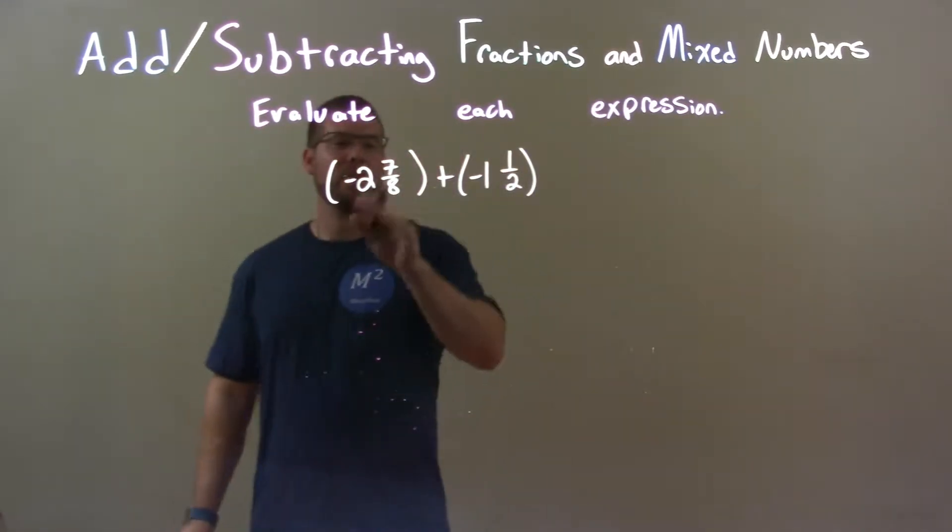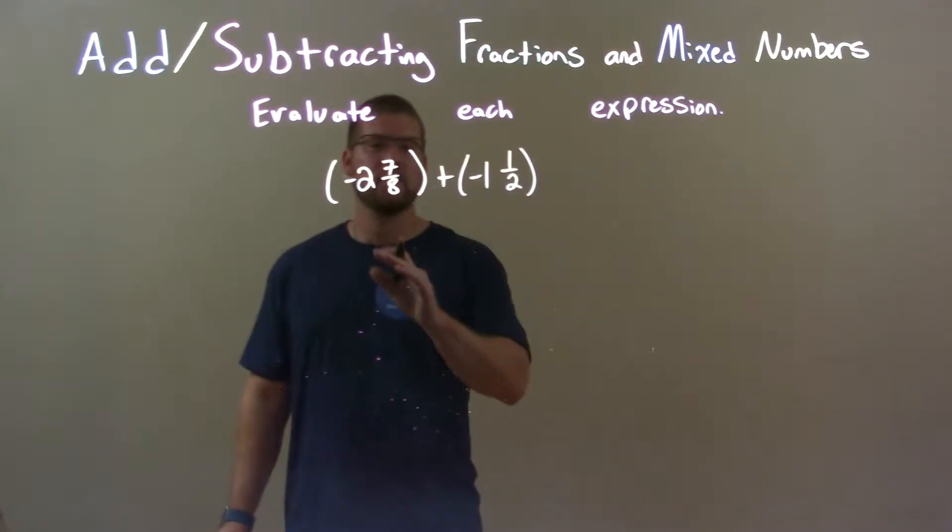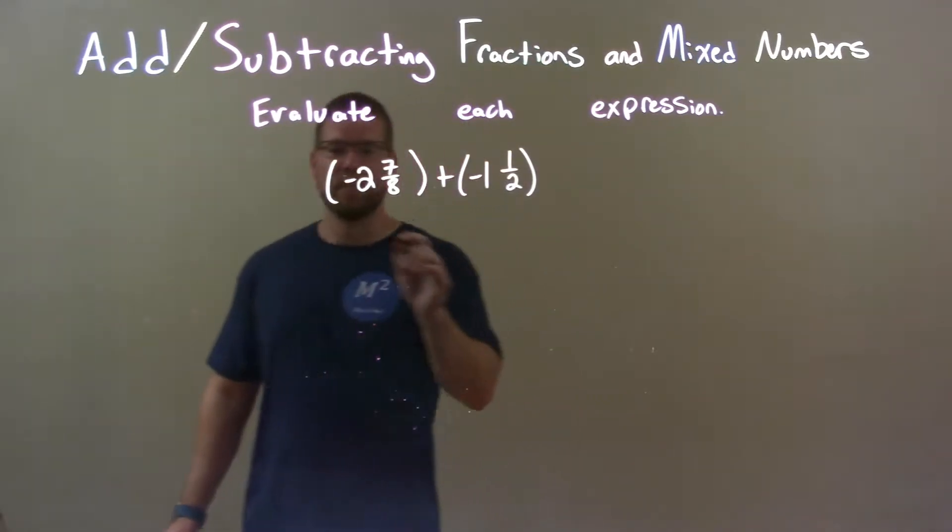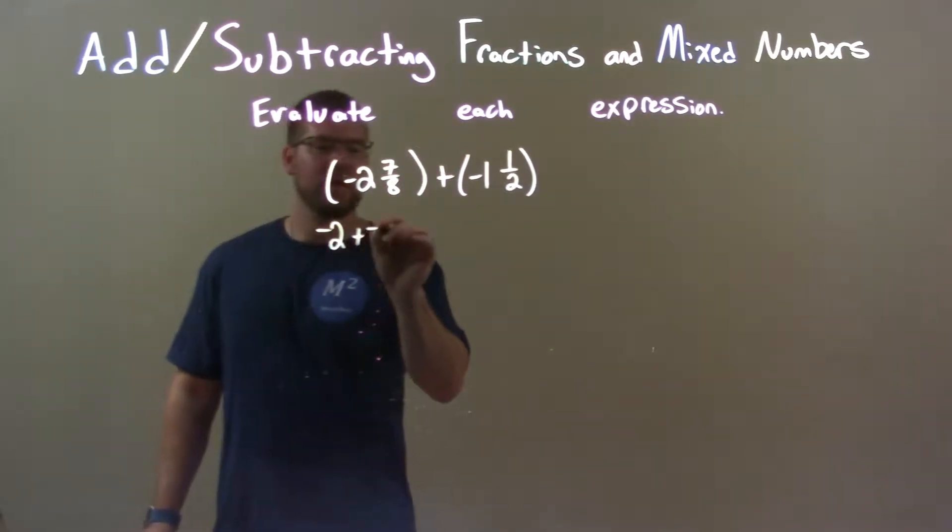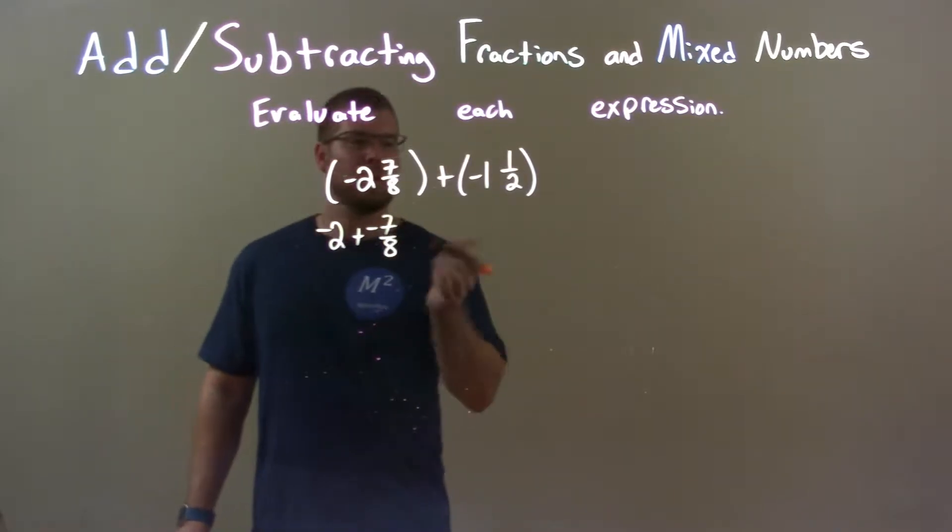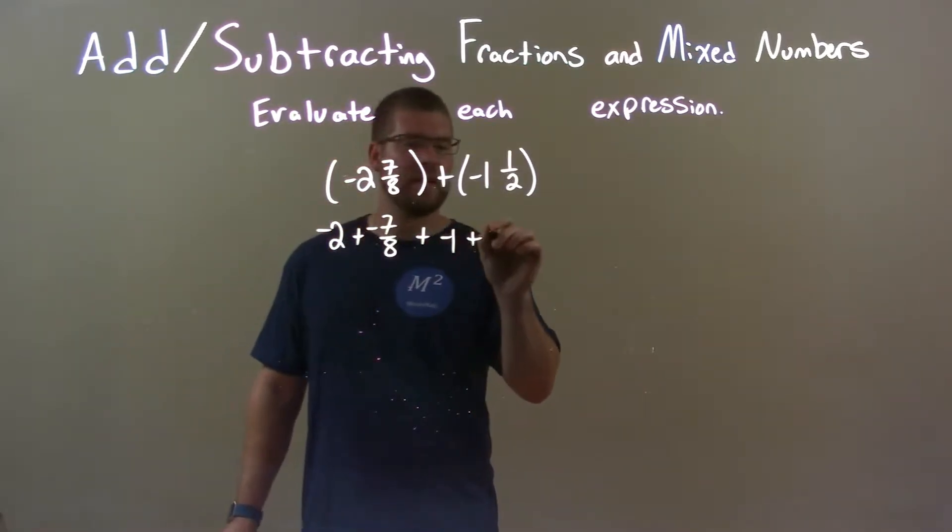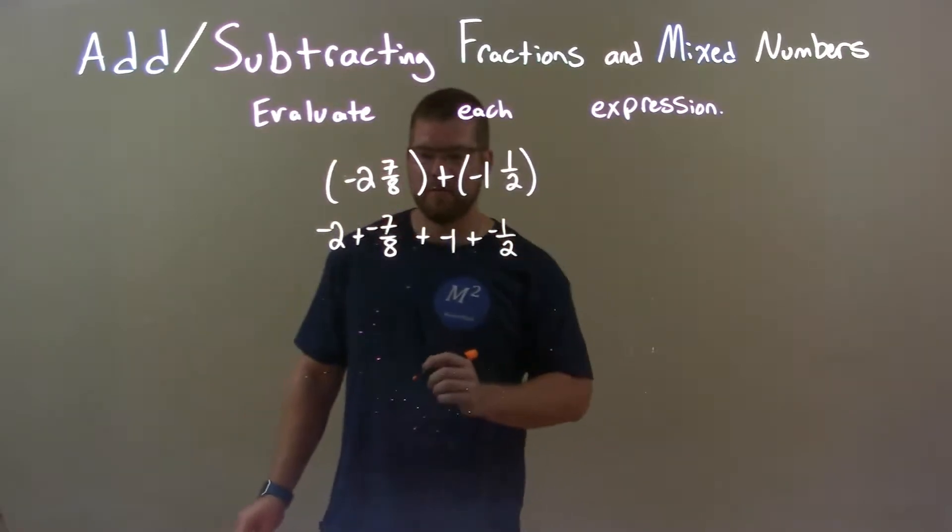First thing I like to do is break down this mixed fraction to be a whole number and a proper fraction. So, we have negative 2 plus a negative 7 eighths here, then plus a negative 1 plus a negative 1 half.